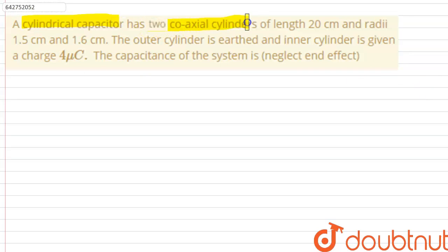two coaxial cylinders of length 20 centimeters and radii 1.5 centimeters and 1.6 centimeters. The outer cylinder is earthed and the inner cylinder is given a charge of 4 microcoulombs. The capacitance of the system is